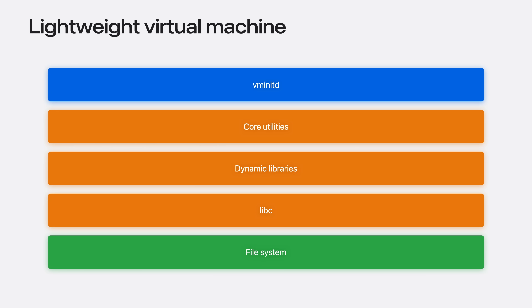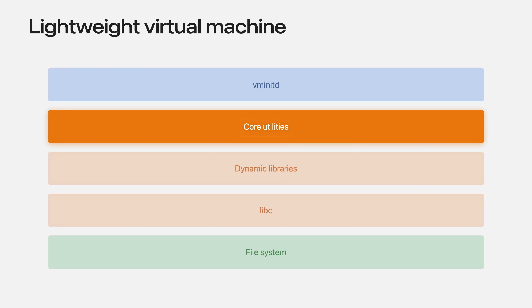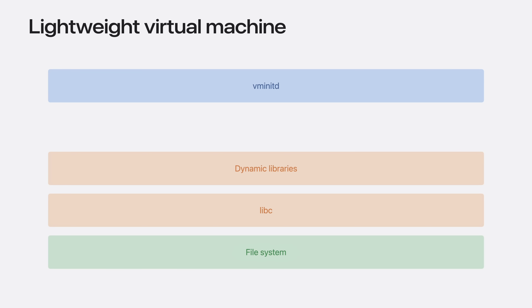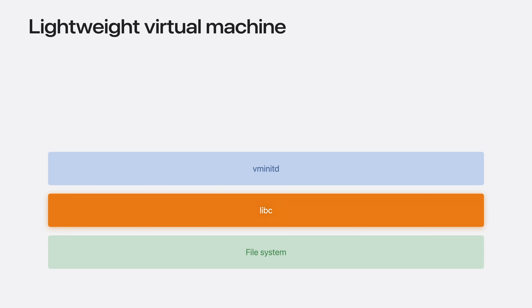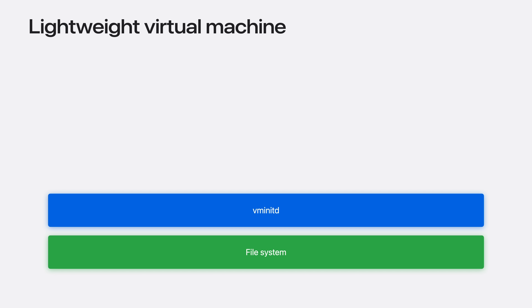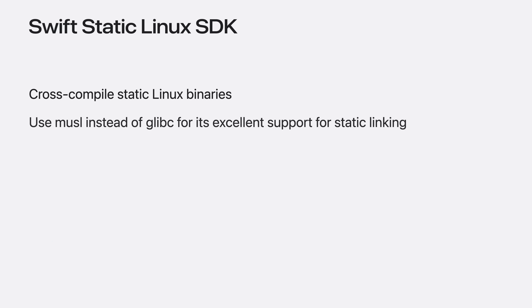Historically, when using a large virtual machine, they are booted as a full system. The file system of these large virtual machines will include things like a libc implementation, dynamic libraries, and core utilities like cd, cp, and ls. For security, we want to reduce the attack surface of our containers. The file system provided by containerization has no core utilities, no dynamic libraries, and no libc implementation. In order for VMInitD to run in this constrained environment where there are no libraries to link to, we need to compile VMInitD as a static executable. For this, we use Swift's static Linux SDK, which allows us to cross-compile static Linux binaries directly from our Mac. We are also able to use Musl, which is a libc implementation that has excellent support for static linking. With this, we produce VMInitD as a static Linux executable cross-compiled from our Mac and able to execute in this isolated environment.